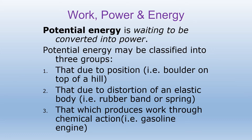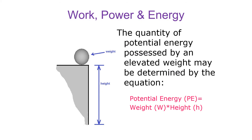Potential energy is energy waiting to be converted into power. It may be classified into three groups: one, that due to position — for example, a boulder on top of a hill that possesses potential energy in terms of its mass and height above the ground; two, energy due to distortion of an elastic body, such as a rubber band or a spring; and three, that which produces work through chemical reaction, for example gasoline. The amount of potential energy possessed by an elevated weight is determined by: potential energy equals weight times height.